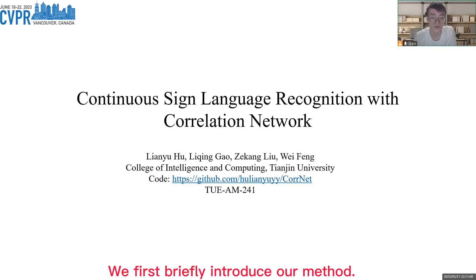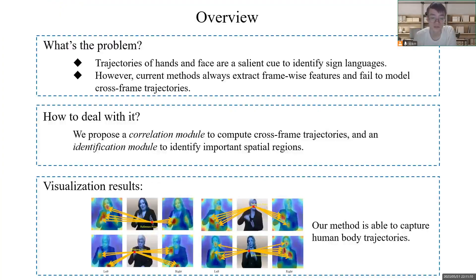We first briefly introduce our method. As sign language is mainly conveyed by both hands and face, the trajectories of these body parts are a salient cue to identify sign language.